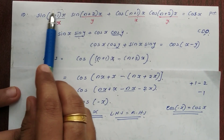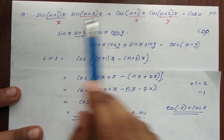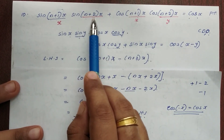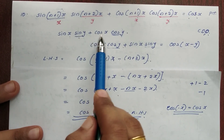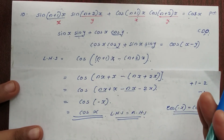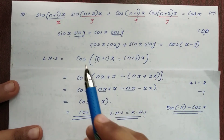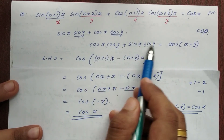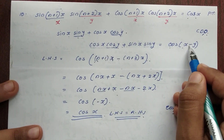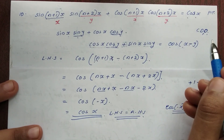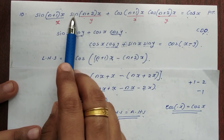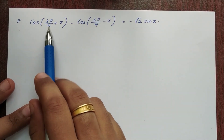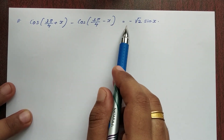So what we can do is: let (n+1)x equal to x and (n+2)x equal to y. Then we can do sin x · sin y + cos x · cos y. This is the formula we apply. So cos x · cos y + sin x · sin y gives us cos(x - y), which is the formula here.